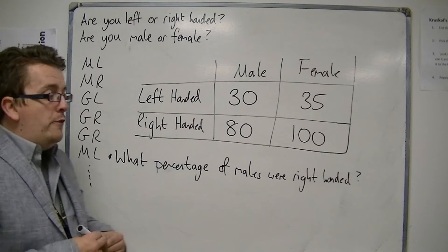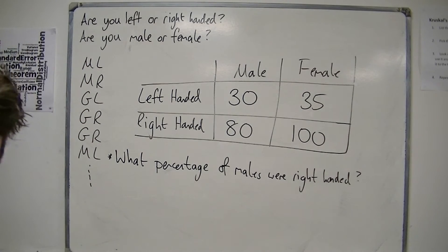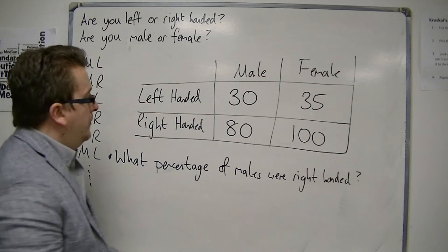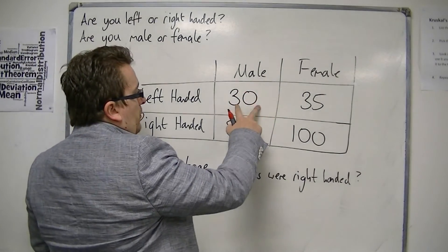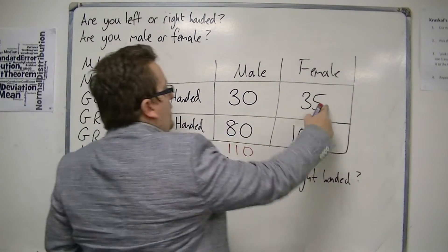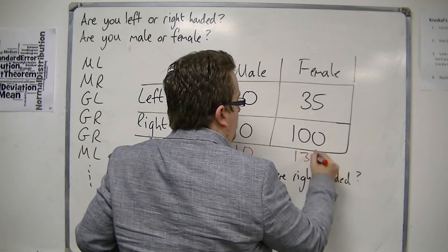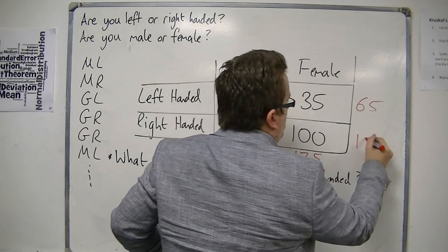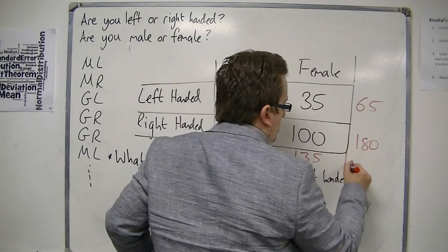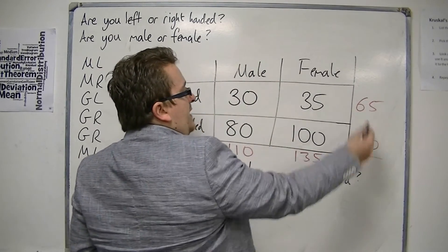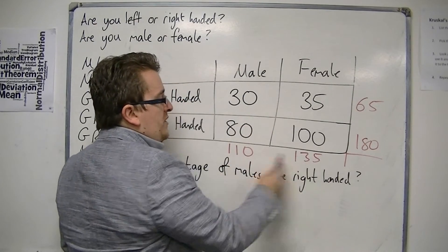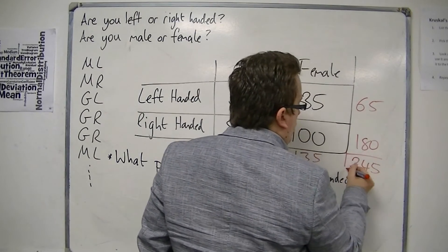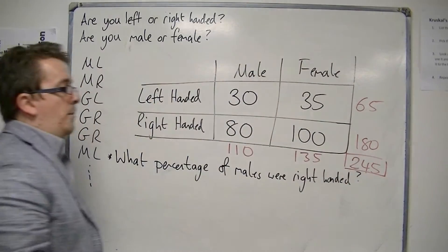Now, it's very, very useful when you have a two-way table to add up the rows and the columns. So, for example, 30 and 80 is 110. 35 and 100 is 135. 30 and 35 is 65. 80 and 100 is 180. So the overall total could be found by adding up 65 and 180, or 110 and 135. So 245 people were asked, were part of this survey.